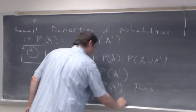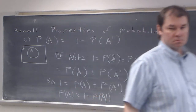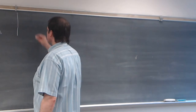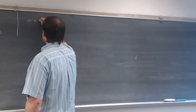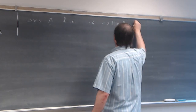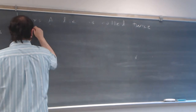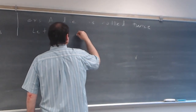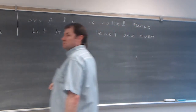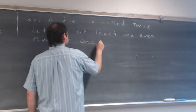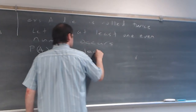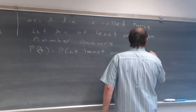That is the proof. I want to look at an example where we can use that. As an example, let's say a die is rolled twice. Let A be the event of at least one even number. Someone says: what is the probability of A?